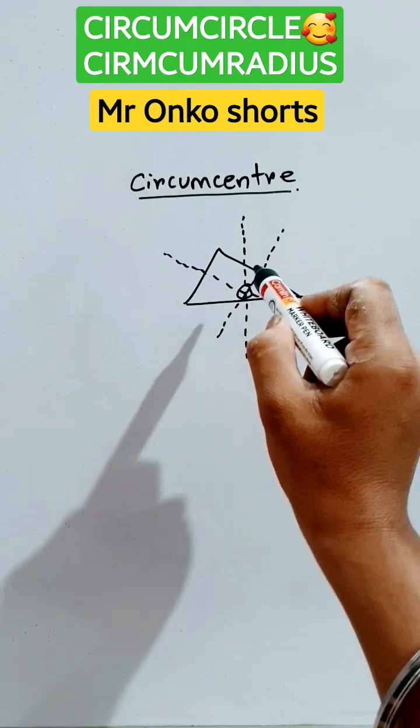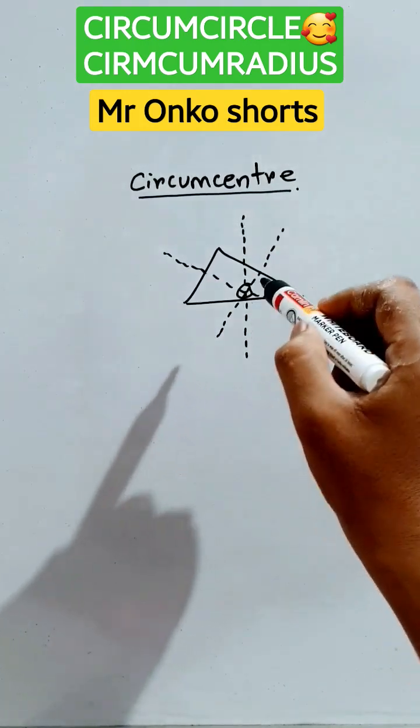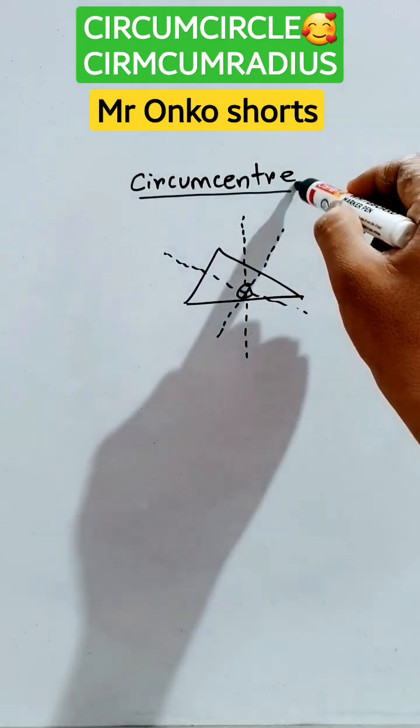Now, this point is the intersection of the perpendicular bisectors of the sides of the given triangle. So, this is called the circumcentre.